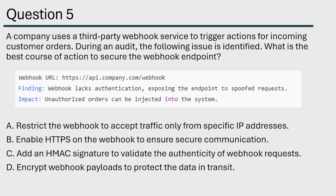Last question for today — question number five. A company uses a third-party webhook service to trigger actions for incoming customer orders. During an audit, the following issue is identified: what is the best course of action to secure the webhook endpoint? We've identified api.company.com/webhook. The webhook lacks authentication, exposing the endpoint to spoofed requests. The impact, of course, is that unauthorized orders can be injected into the system.